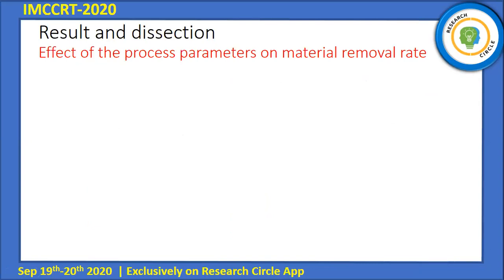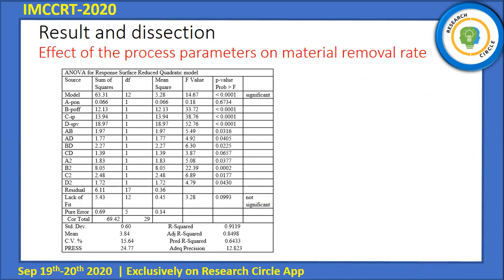Results and discussion. First, we look at the effect of the process parameters on material removal rate. In the ANOVA table, the model p-value of 0.001 is significant. The p-value threshold is 0.05: below 0.05 indicates significant; above 0.05 indicates not significant.